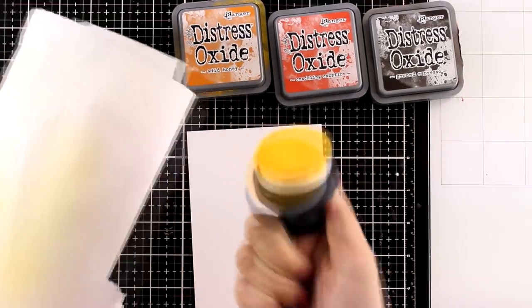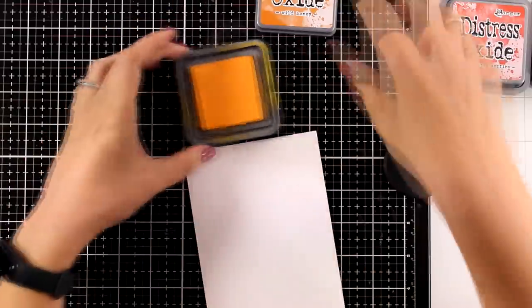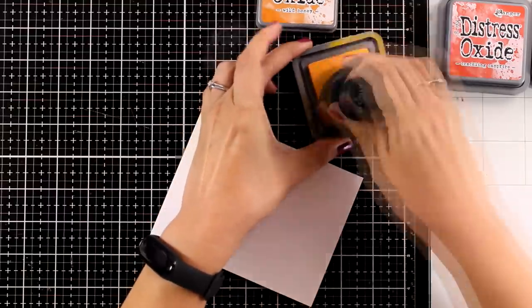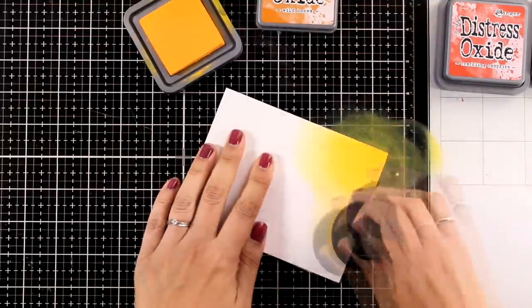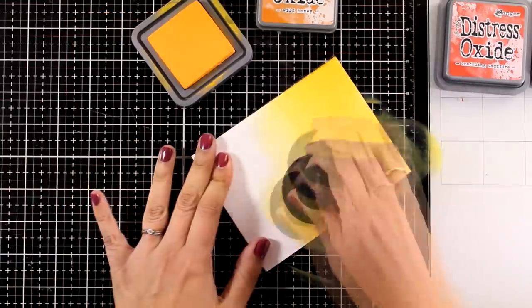I'm going to do all my blending with these big blending brushes by Altenew just because they cover up a big area really quickly. I'm going to start with Wild Honey, the lightest color, and completely cover up the whole area. This way it's going to make it easy for me to blend the next colors that I'm going to add.